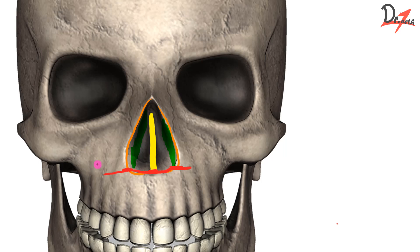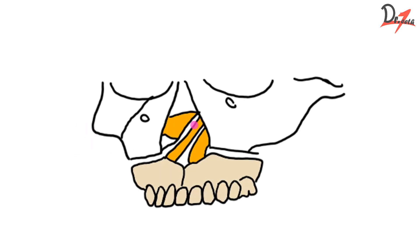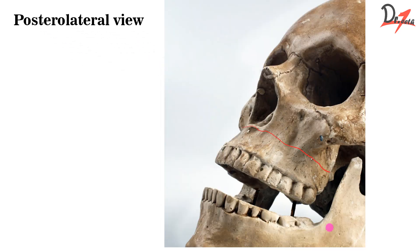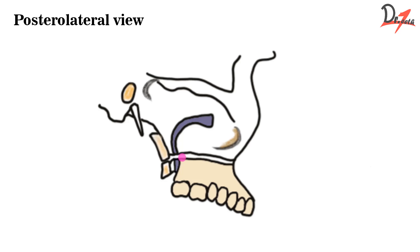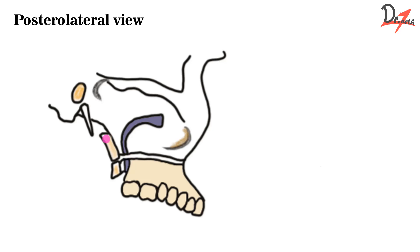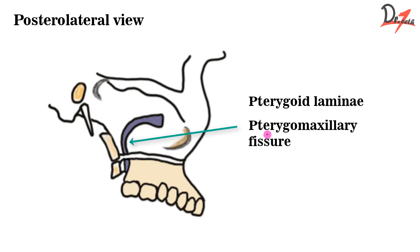The fracture line extends posteriorly and goes behind the tuberosity. If we try to visualize it using a drawing, you can see the lateral nasal wall is fractured — the entire segment is separated from the adjacent segment — and the fracture line is above the apices of the teeth. Looking at the lateral view drawing, we have a lateral fracture behind the tuberosity. Here we have the pterygoid laminae, which is also fractured, and the pterygo-maxillary fissure is also involved in the fracture line. This is the LeFort 1 fracture — low level — also known as the floating maxilla.